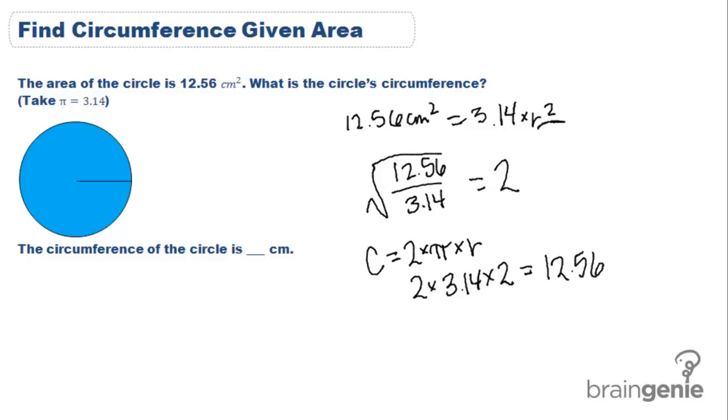In this case, our radius means that our circumference is also the same as our area. Only this one is in centimeters and area is in centimeters squared.